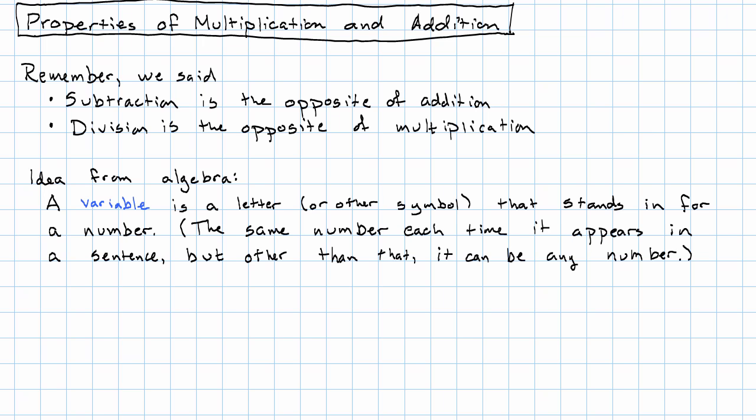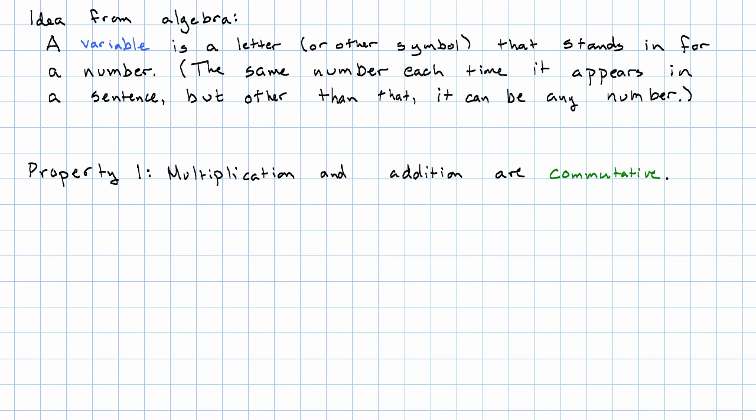In order to describe these properties of multiplication and addition, we're going to use variables. And we'll talk a little bit about how we're using these variables as we introduce the properties. So, the first property we're going to talk about is the commutative property. Multiplication and addition are each commutative. What does that mean?